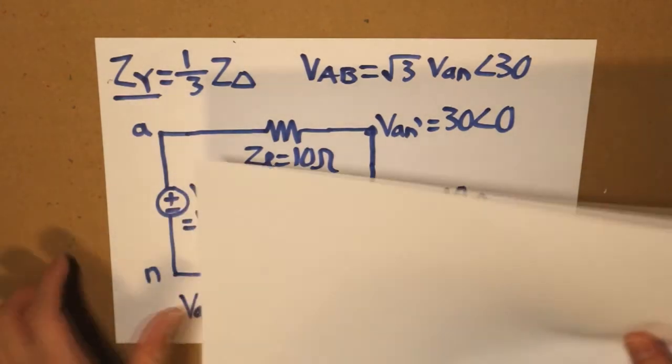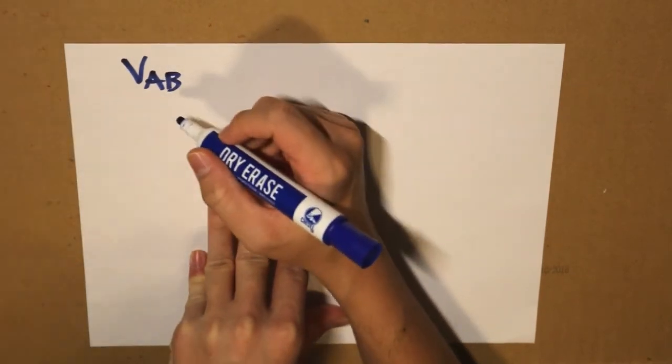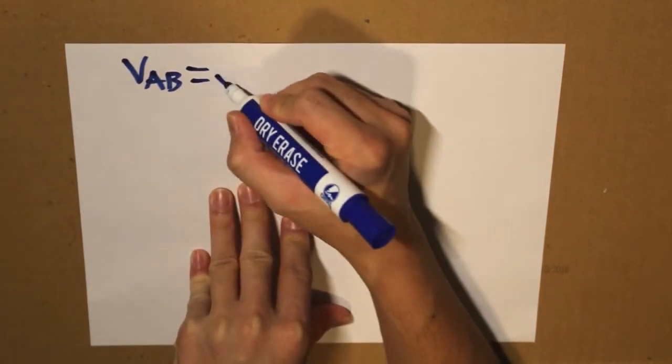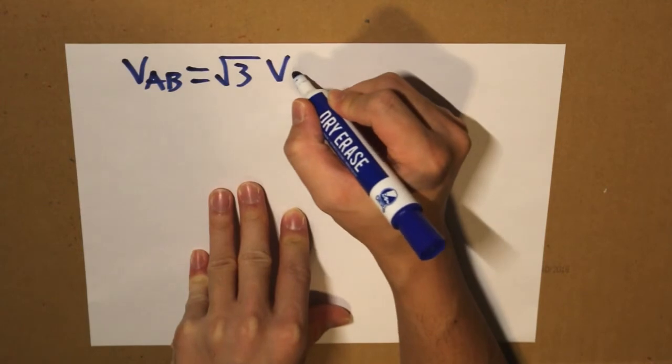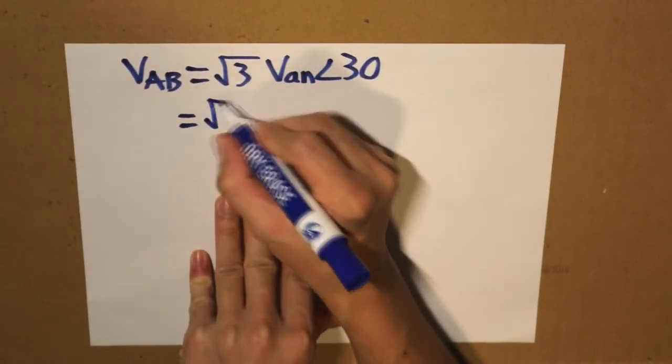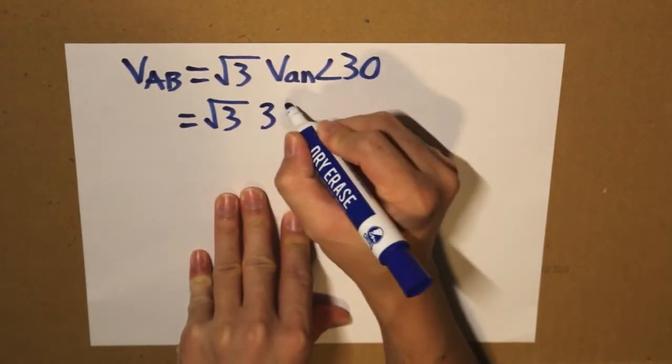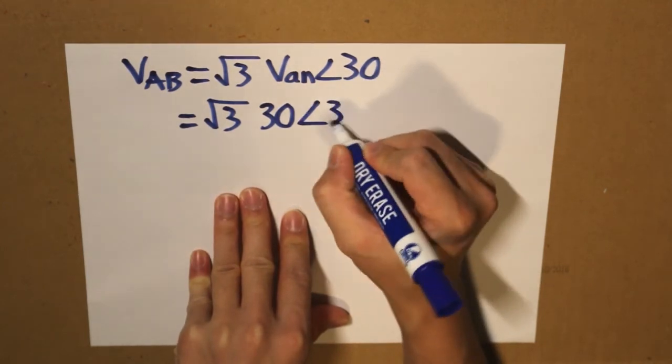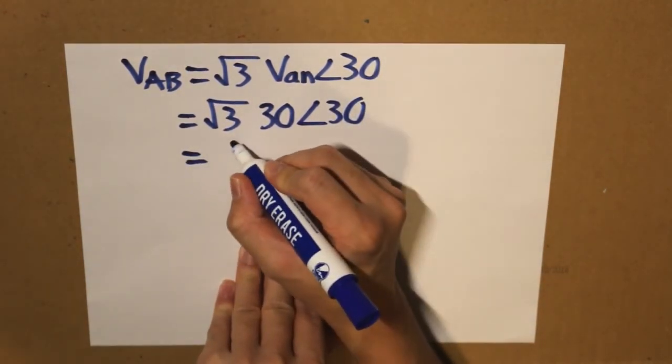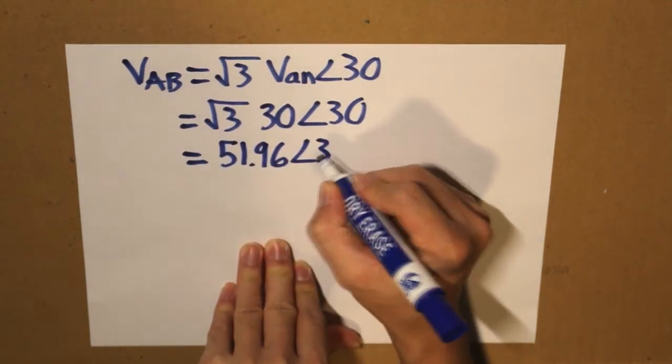So what we do, I'm going to get a new blank piece of paper and write down our equation. So this delta voltage is what we have. That is equal to square root of 3. And in the end, what we get is we take square root of 3, multiply it by 30. And our answer would be, using our calculator, 51.96, 30 degrees volts.